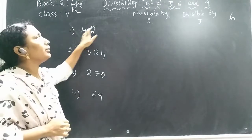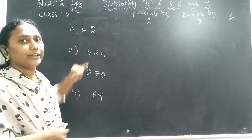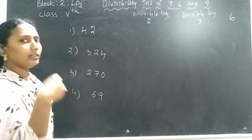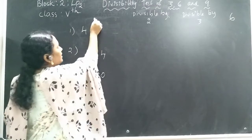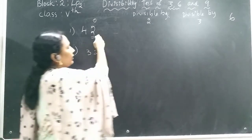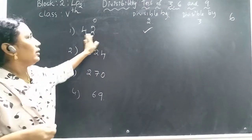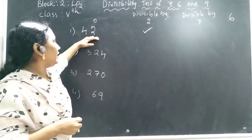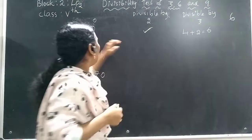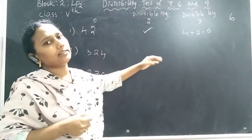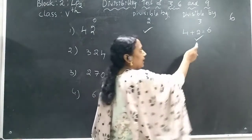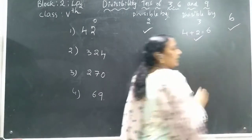A given number must be divisible by both 2 and 3 to satisfy the divisibility test for 6. For example, take 42. Is it divisible by 2? Yes — the ones place is 2, which is even. Now for divisibility by 3: add 4 plus 2, which equals 6. Is 6 in the 3 times table? Yes — 3 times 2 is 6. So 42 is divisible by 3. Since it is divisible by both 2 and 3, 42 is automatically divisible by 6.